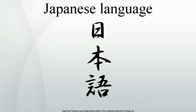Little is known of the language's prehistory, or when it first appeared in Japan. Chinese documents from the 3rd century recorded a few Japanese words, but substantial texts did not appear until the 8th century. During the Heian period, Chinese had a considerable influence on the vocabulary and phonology of Old Japanese. Late Middle Japanese saw changes in features that brought it closer to the modern language, as well as the first appearance of European loanwords.